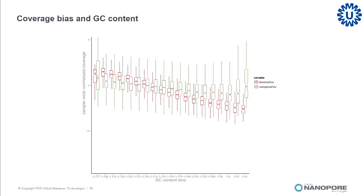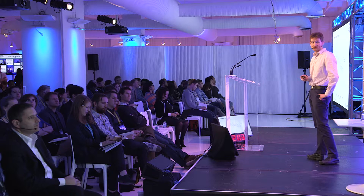We first looked at some sequencing specs of these data, like read-length profiles, but I think very interesting is this GC bias plot — the coverage distribution affected by GC bias. Here we compared Illumina data for this sample to the nanopore data of the same sample, and you can see that there is much less bias in general for high-GC or low-GC regions when you compare nanopore to Illumina.